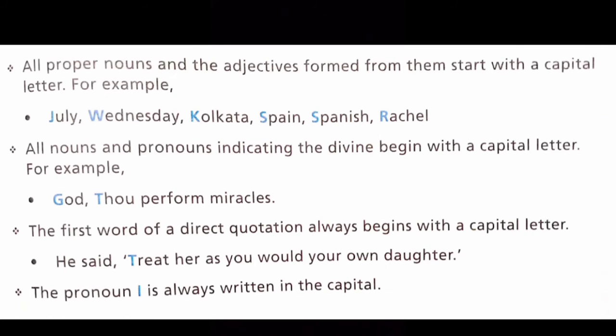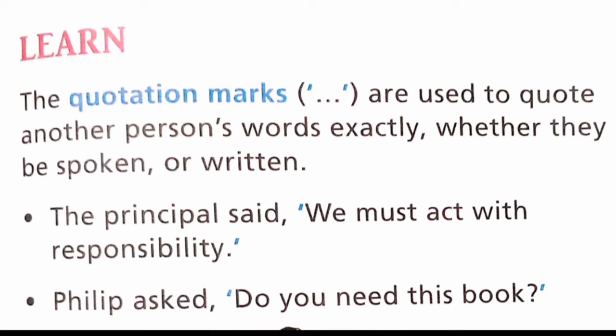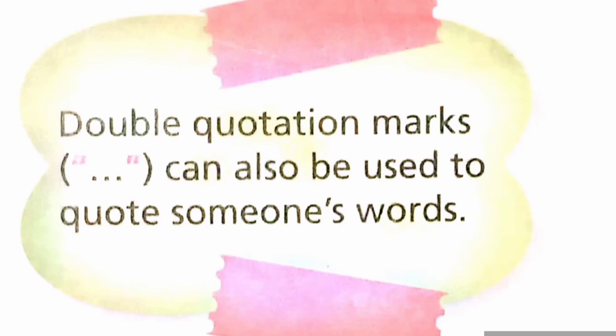All nouns and pronouns indicating the divine begin with a capital letter. For example: 'God performs miracles.' The first word of a direct quotation always begins with a capital letter. For example: 'He said, Treat her as you would your own daughter.' The pronoun 'I' is always written as a capital letter. Quotation marks are used to quote another person's words exactly, whether spoken or written. For example: 'The principal said, We must act on this responsibility.' 'Philip says, Do you need this book?' Double quotation marks can also be used to quote someone's words.